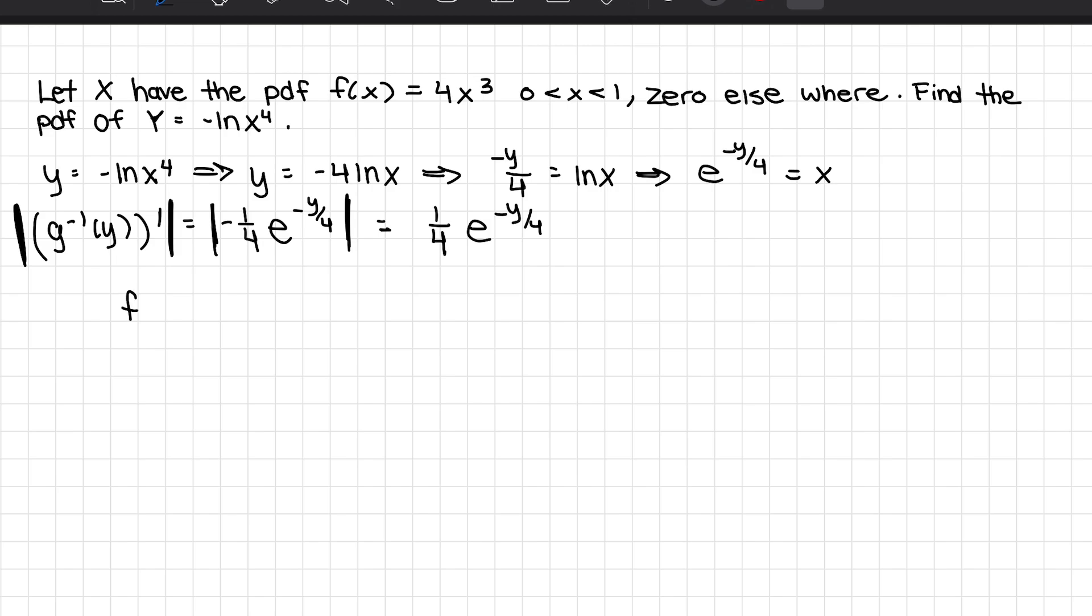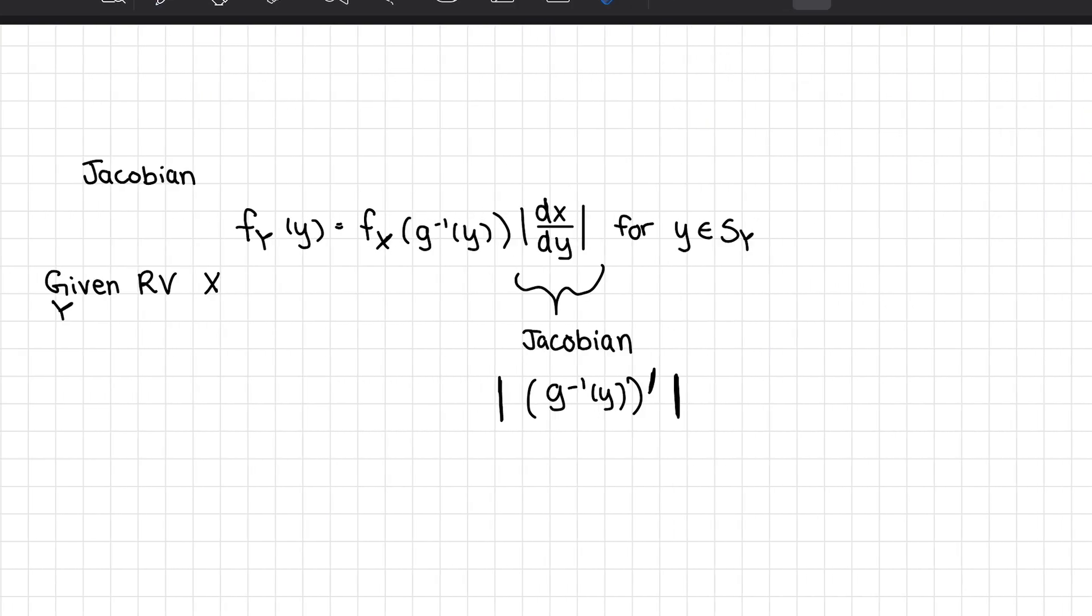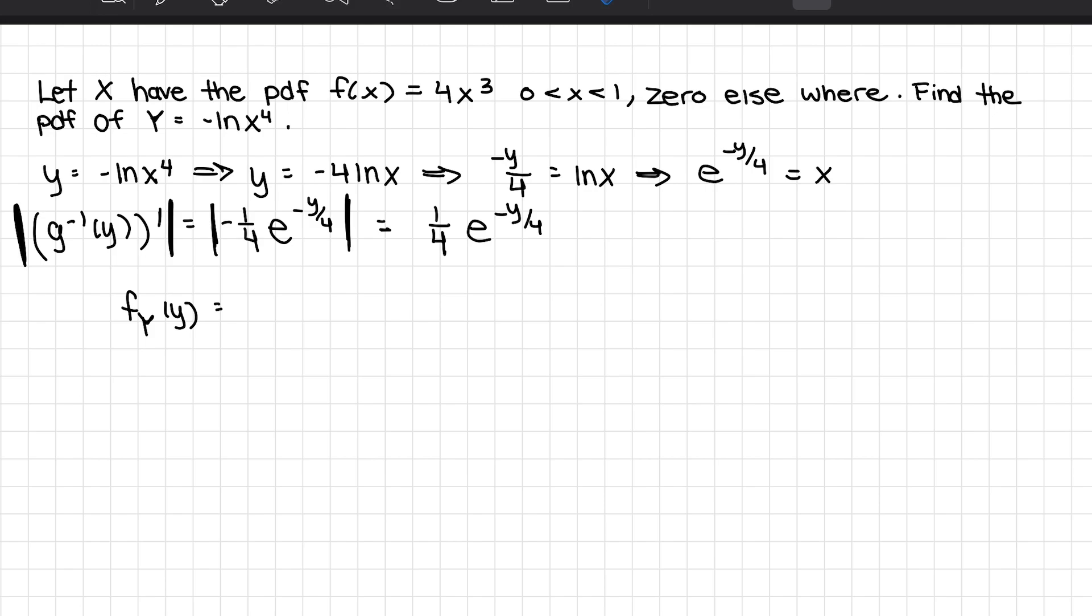The PDF of Y is going to equal the PDF of X with our inverse inputted into it. So, my PDF of the random variable X here was 4x cubed. And I know my x is equal to this now. So, I'm going to input this into this x. So, I get 4 e to the minus y over 4 cubed times the derivative of my inverse, which we found over here: 1 over 4 e negative y over 4.